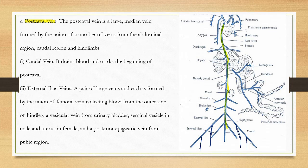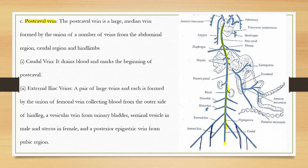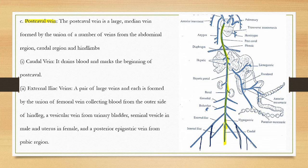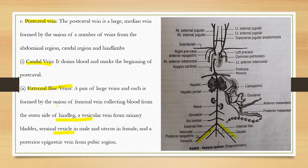This is the postcaval vein which opens into the right atrium. Let's start from here. It marks the beginning of the postcaval. The external iliac vein is a pair of large veins, each formed by the union of the femoral vein.